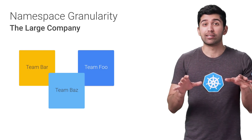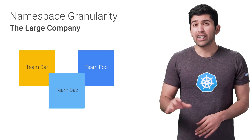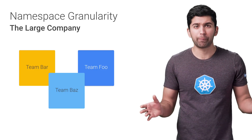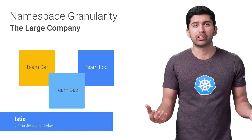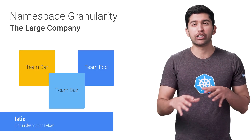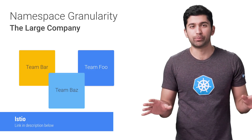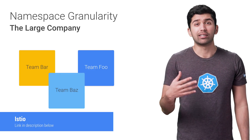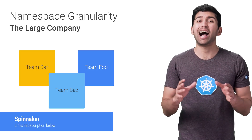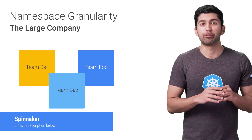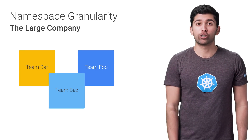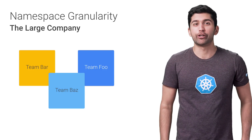At large companies, everyone doesn't know everyone else. Teams are working on features that other teams might not even know about. Teams are communicating using service contracts, and maybe using service meshes like Istio to coordinate communication. Trying to run the whole stack locally is just impossible. Using a Kubernetes-aware CD system like Spinnaker is highly recommended. At this point, each team definitely needs their own namespace, and might even opt for multiple namespaces to run development and production environments. Setting up RBAC and resource quotas is a good idea as well, and we'll cover those in future episodes.